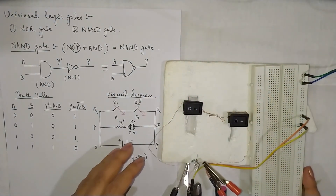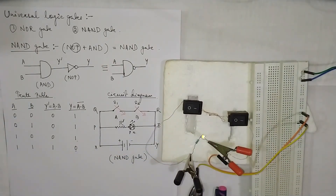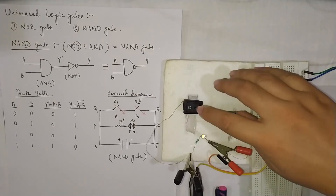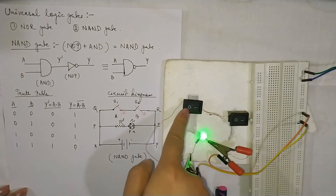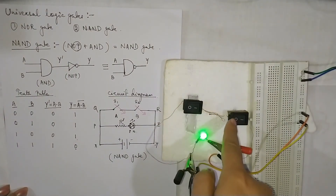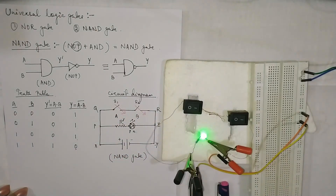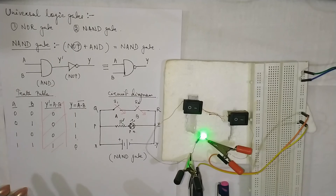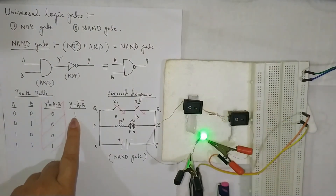Now let's switch on the circuit and see what happens according to the truth table. The switches are in 0, 0 — both open, upper path is disconnected. You see the output is high. We are considering the NAND gate, not the AND gate. So with inputs 0, 0 you can see the output is high.